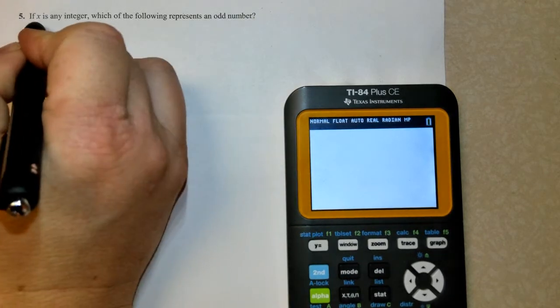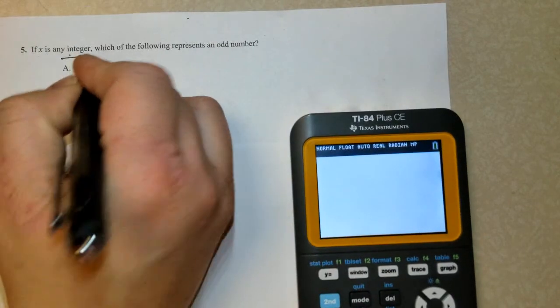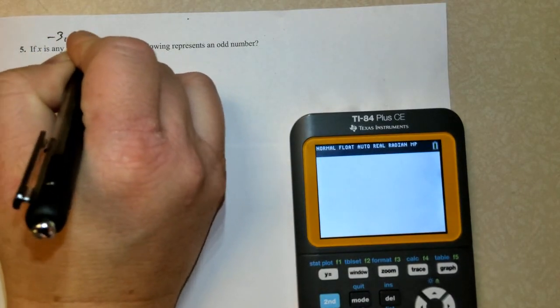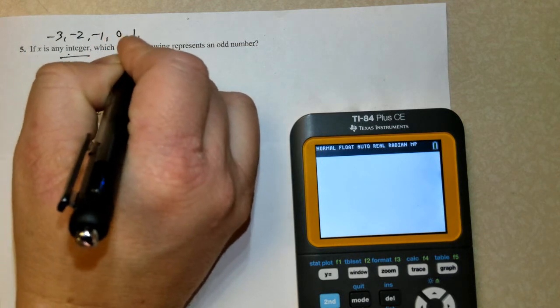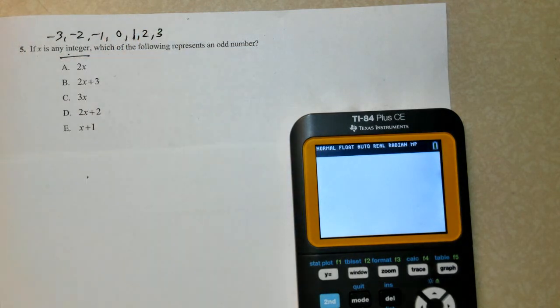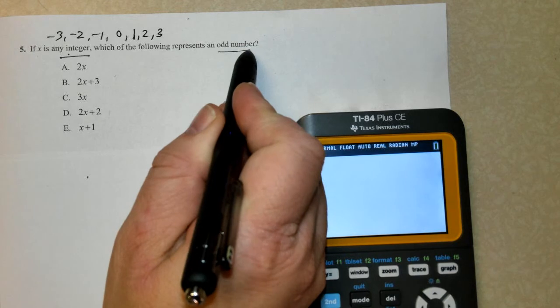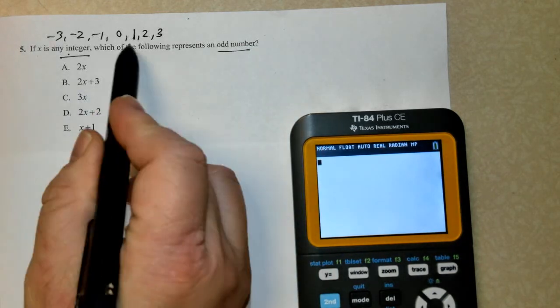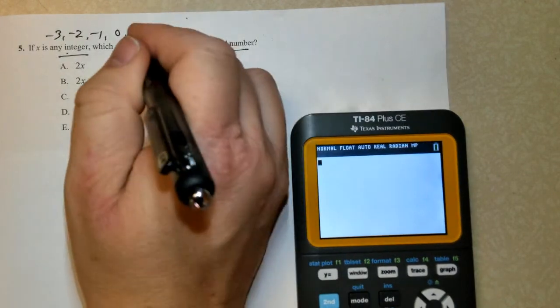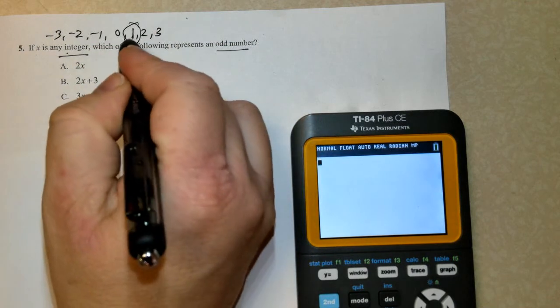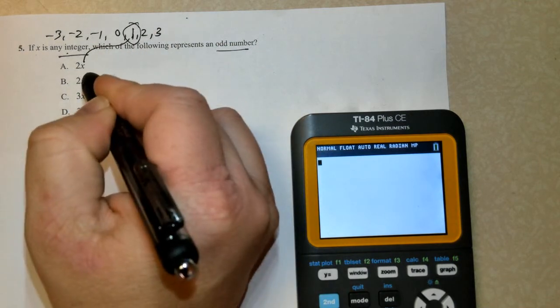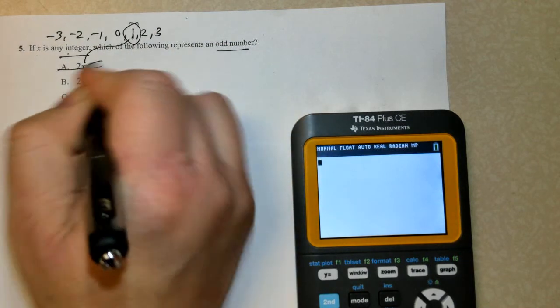So x is an integer. It can be positive or negative. Remember, integers are like negative 3, negative 2, negative 1, 0, 1, 2, 3. They're not decimals like 3.5. And so we have an integer, which of the following gives you an odd number. So I'm going to choose one of these, and I'm going to input and see if I get an odd. So let's start with 1. Very simple. So if I plug in 1, 2 times 1 is 2. Well, that's not odd. Cancel it out.